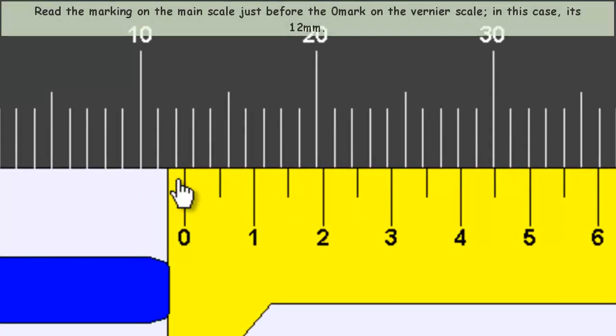Look at the markings on the main scale. Since the 0 mark on the vernier scale is roughly between 12 and 13 mm, the vernier scale helps determine the exact measurement.